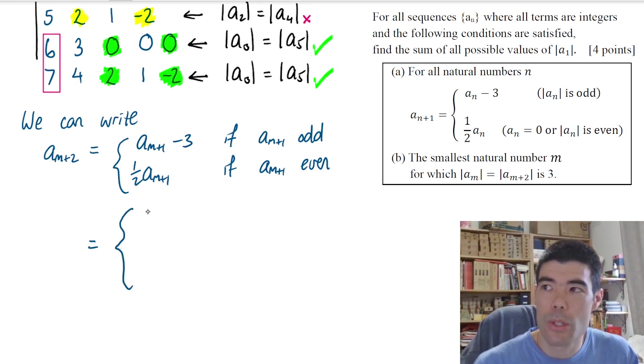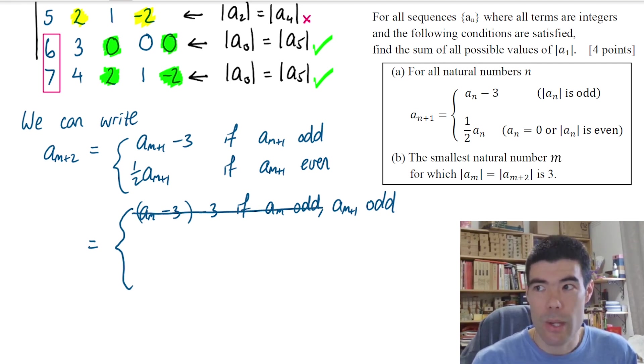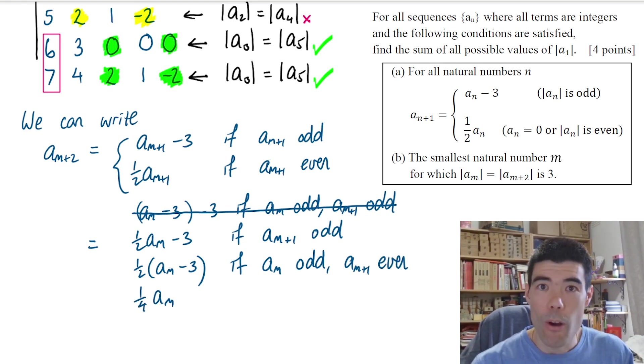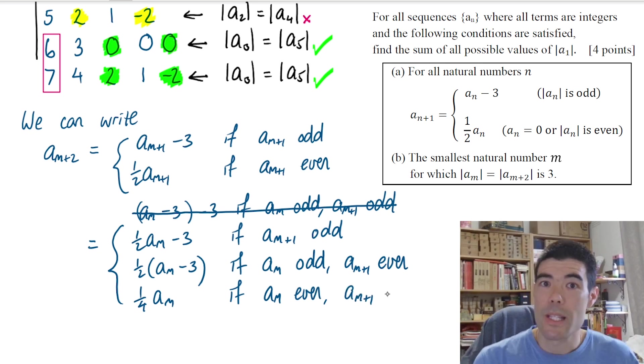So it's either going to be a_{m+1} minus 3, if a_{m+1} is odd, or if a_{m+1} were even, it's going to be half of a_{m+1}. So can we split up the first case into two cases? Well, a_{m+1} could be a_m minus 3, but that would only happen if a_m were odd. Now, if a_{m+1} were odd, a_m cannot be odd because they're going to have a difference of three. One of them is going to be odd and one of them is going to be even. So actually that case is never going to happen. So if a_{m+1} is odd, actually a_m must have been even. So we're going to have a half of a_m minus 3. Now, for the second case, a half of a_{m+1}, well, this one could have been a_m minus 3 if a_m were even and a_{m+1} were odd. But it could also have been half of half of a_m, which is a quarter of a_m, if they were both even. So now we have three cases or three ways to express a_{m+2} in terms of a_m.